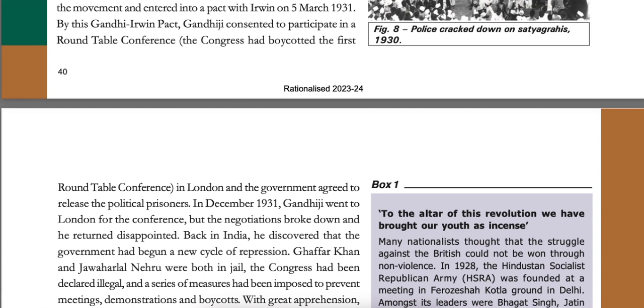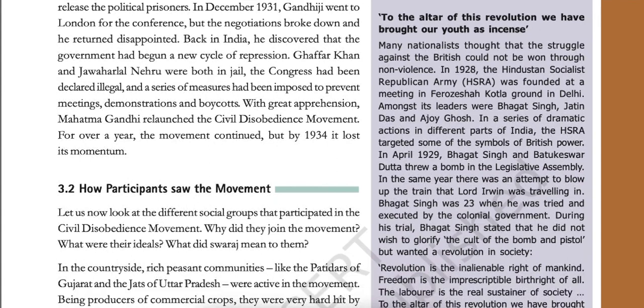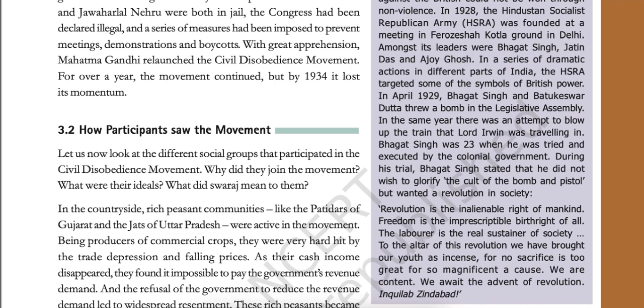By this Gandhi-Irwin Pact, Gandhiji consented to participate in a round table conference. The Congress had boycotted the first roundtable conference in London, and the government agreed to release the political prisoners. In December 1931, Gandhiji went to London for the conference but the negotiations broke down and he returned disappointed. Back in India, he discovered that the government had begun a new cycle of repression. Ghaffar Khan and Jawaharlal Nehru were both in jail. The Congress had been declared illegal and a series of measures had been imposed to prevent meetings, demonstrations and boycotts. With great apprehension, Mahatma Gandhi relaunched the civil disobedience movement. For over a year the movement continued, but by 1934 it lost its momentum.